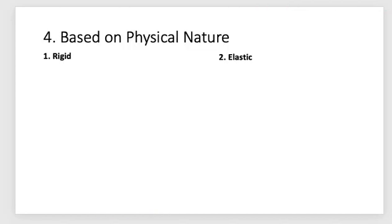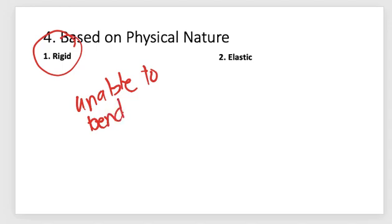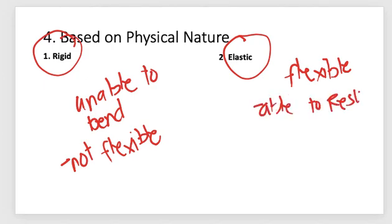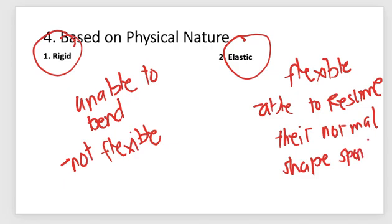The classification based on physical nature has two types: rigid and elastic. Rigid gels are unable to bend or be forced out of shape — they are not flexible. Elastic gels, on the other hand, are flexible and are able to resume their normal shape spontaneously after distortion.